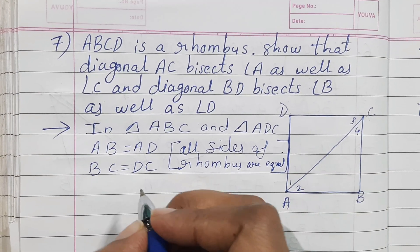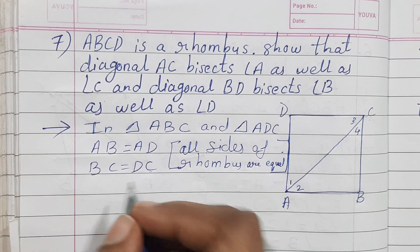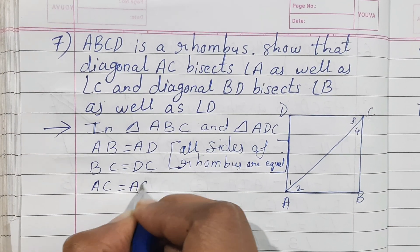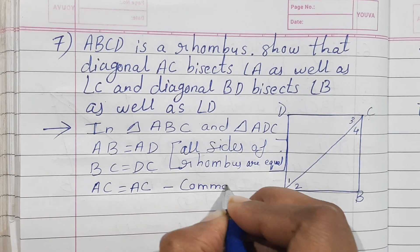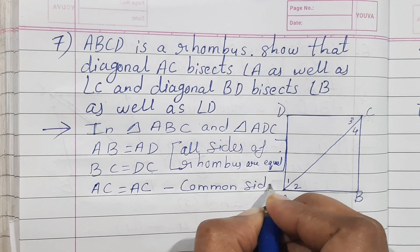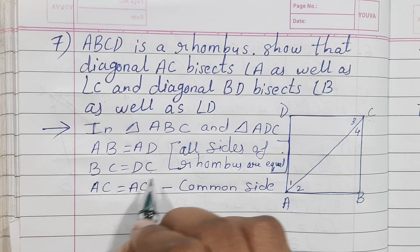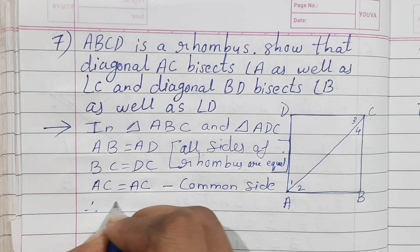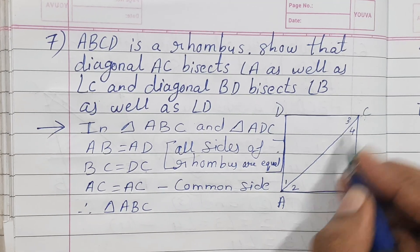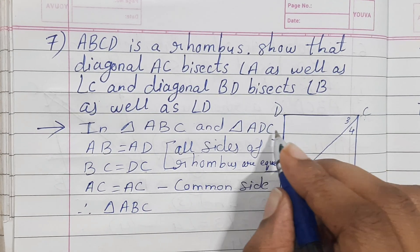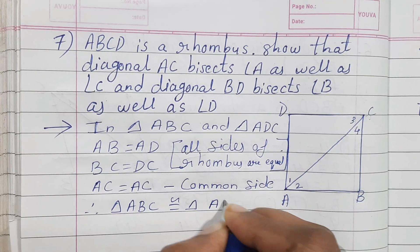Then AC is the common side, so AC is equal to AC — this is your common side. You can see that both triangles are congruent by SSS rule — we did not use any angle here. Therefore, triangle ABC is congruent to triangle ADC by the Side-Side-Side rule.